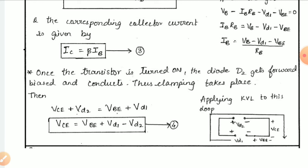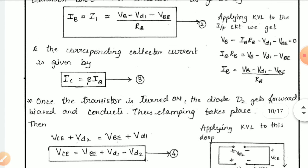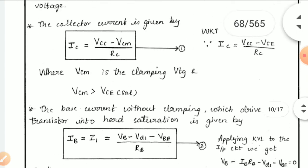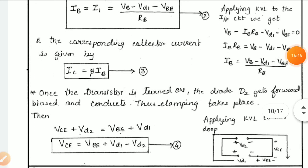In the next session, we will discuss isolation of gate and base drive control — its necessity and different methods. Then we will move on to the Insulated Gate Bipolar Junction Transistor (IGBT): how it is constructed and other related topics. Thank you.